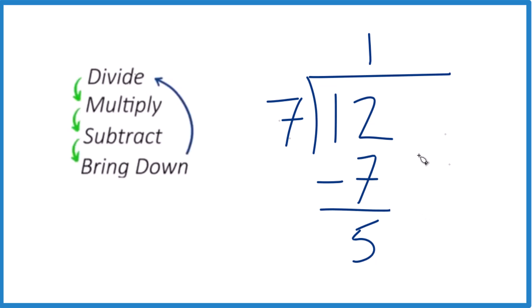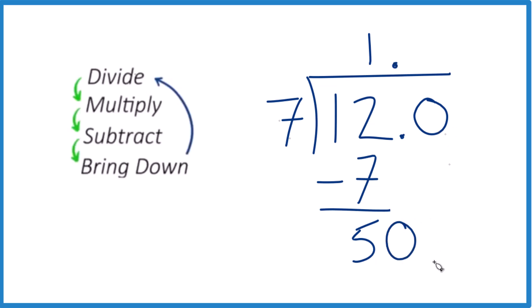But there's nothing to bring down. Here's what you do: put a decimal point after the 12 here, and we can call it 12.0. It's still 12, but if we put our decimal point up here, then we can bring the 0 down.